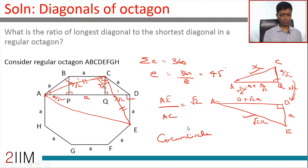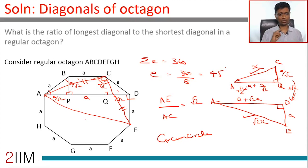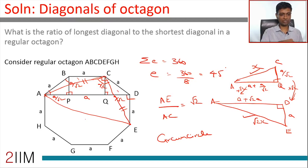The most important idea here: a regular octagon, when sliced and diced, gives isosceles right angle triangles, rectangles, and squares. A regular hexagon gives nothing but six equilateral triangles placed around a central point. These two starting points are very useful for all questions involving these figures.